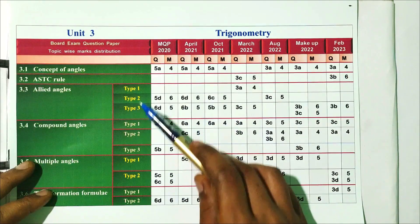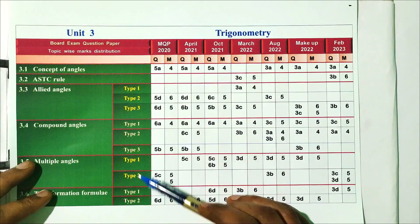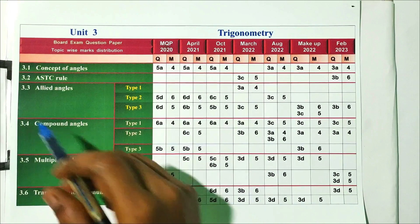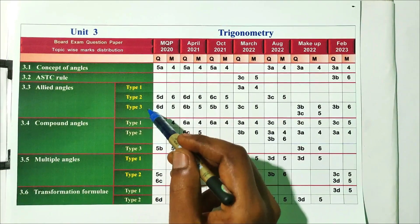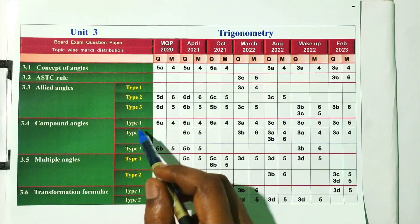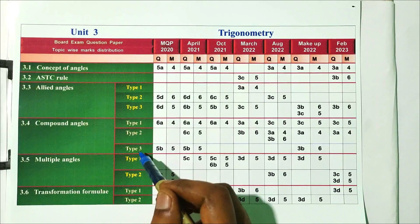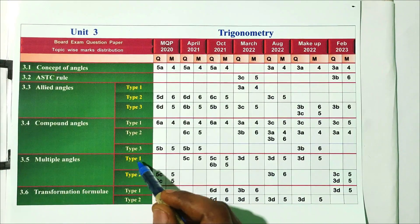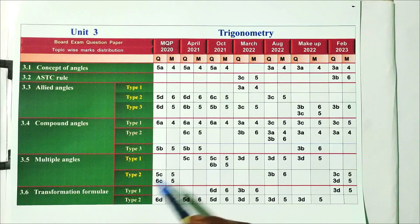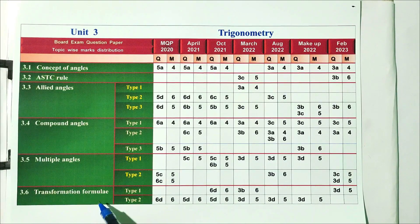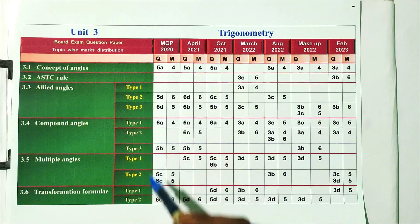Topic 3.1 is straightforward. Topic 3.3 is allied angles — Type 1, Type 2, Type 3. Topic 3.4 is compound angles — Type 1, Type 2, Type 3. Topic 3.5 is multiple angles — Type 1, Type 2 — with prove-that and show-that questions. Topic 3.6 is transformation formulas — Type 1, Type 2. The concept is clear.